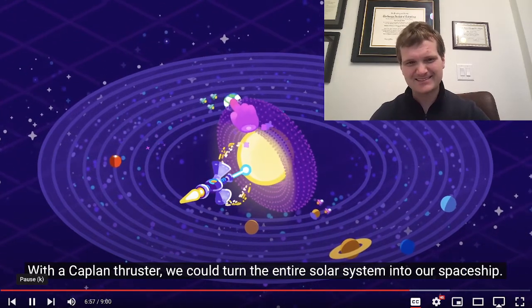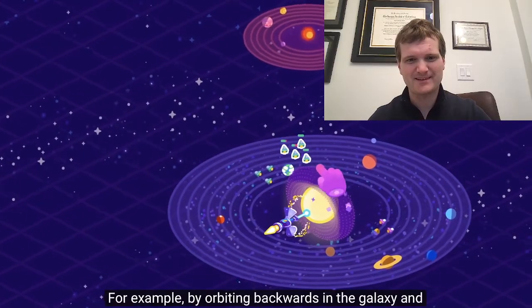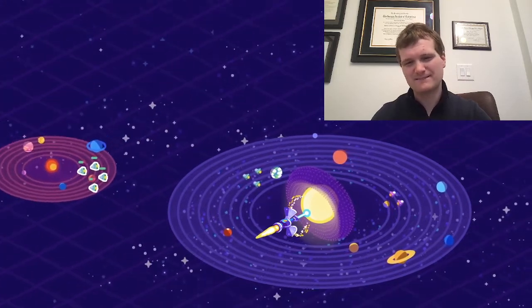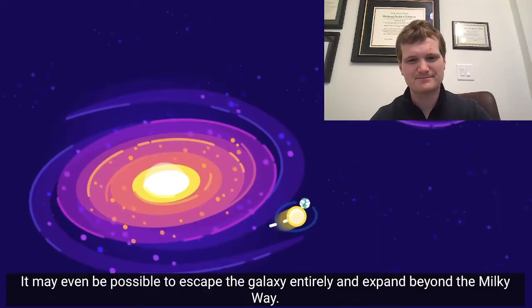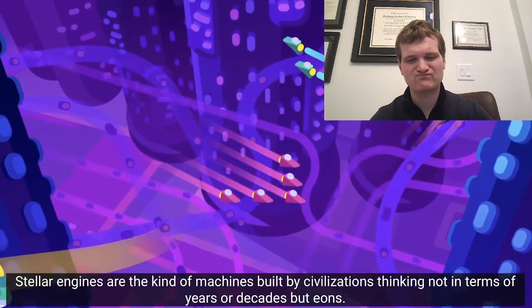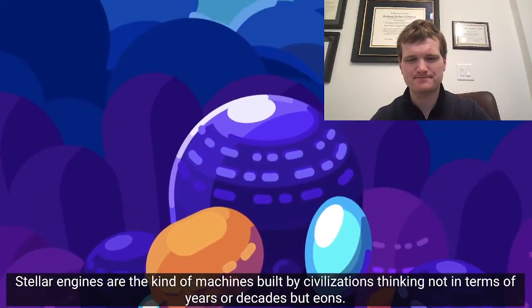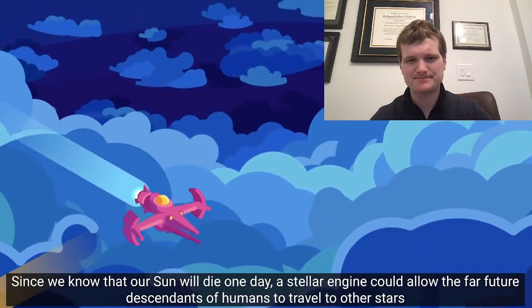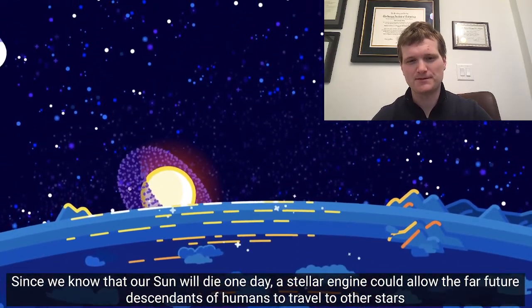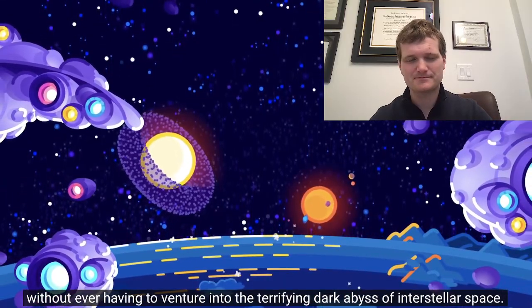With the Kaplan thruster, we could turn the entire solar system into our spaceship. For example, by orbiting backwards in the galaxy and colonizing hundreds or thousands of stars as we pass by them. It may even be possible to escape the galaxy entirely and expand beyond the Milky Way. Stellar engines are the kind of machines built by civilizations thinking not in terms of years or decades, but eons.